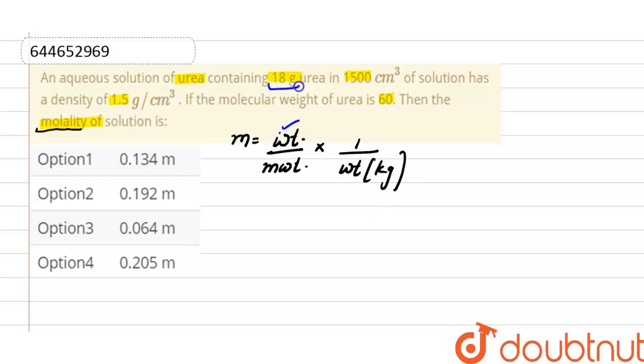Now here weight of solute is given, that is 18. Molecular weight of solute is given, 60. Weight of solvent is not given, but density and volume is given. And as we know, density equals mass by volume, so mass is density into volume.